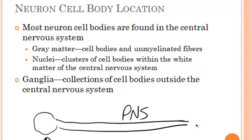Cell bodies are not myelinated — only the axon has myelination on it. The unmyelinated cell body is what we call gray matter, and you see this in both the brain and the spinal cord. There's gray matter and there's what's called white matter. White matter looks white because it has the myelination; the gray matter does not have myelination.